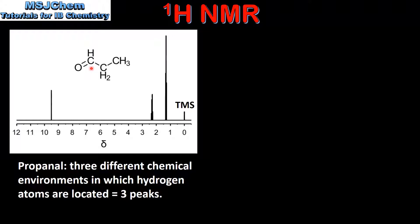Our next example is the NMR spectrum for propanol. In propanol there are three different chemical environments in which hydrogen atoms are located. The one hydrogen atom bonded to one carbon, the two hydrogen atoms bonded to another carbon, and the three hydrogen atoms bonded to another carbon are all in different chemical environments. When we look at the NMR spectrum for propanol we can see there are three peaks which correspond to the three different chemical environments.